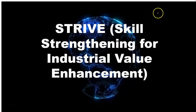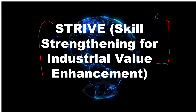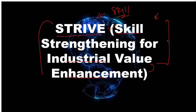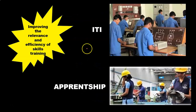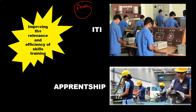Now the next program is Strive, which is somewhat similar to Sankalp but there are some differences. Strive is also related to skill development and is launched by the Ministry of Skill Development. Its full form is Skill Strengthening for Industrial Value Enhancement. Strive is a very important program and you have to remember this full form. The main aim of Strive is improving the relevance and efficiency of skill training by improving the ITI and apprenticeship programs run by the government.